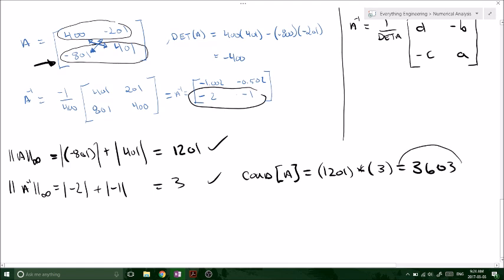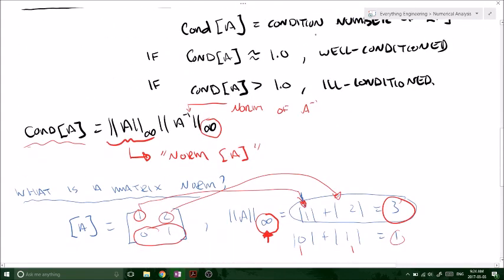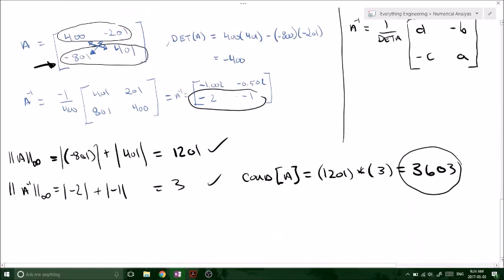So this is the condition number. The condition of A is 3,603. So remember before I said, okay, well, a well-conditioned system is going to have a condition number somewhere close to 1, and an ill-conditioned system is going to have a number greater than 1. So how much greater than 1 is too big?